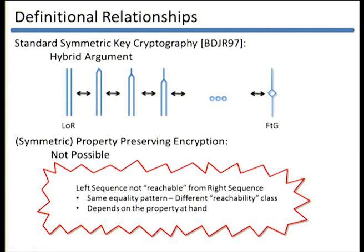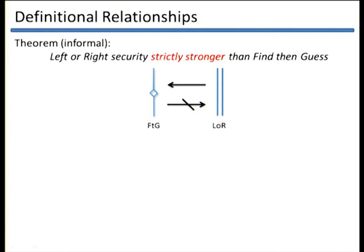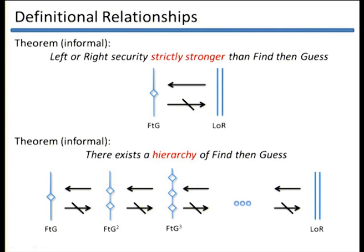FTG security says that two sequences are indistinguishable when they differ in only one message — the challenge message. Left-or-right security says something stronger: all sequences with the same equality pattern are indistinguishable. This is the main result of our work — that in property-preserving encryption, left-or-right security is strictly stronger than find-then-guess security. By generalizing FTG to allow a constant number of challenge pairs, we discovered an entire hierarchy of strictly stronger notions of security.